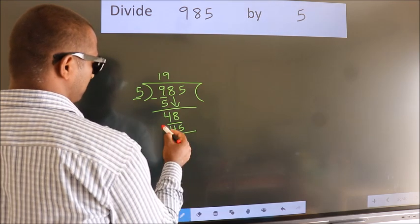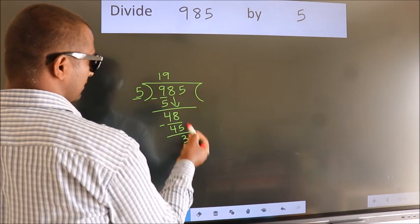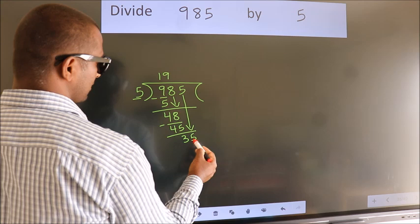Now, we subtract. We get 3. After this, bring down the beside number. So, 5 down. So, 35.